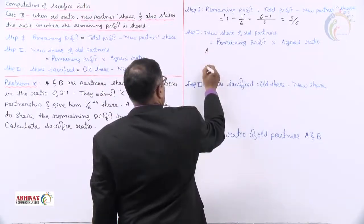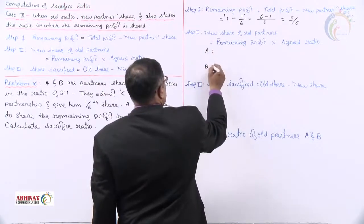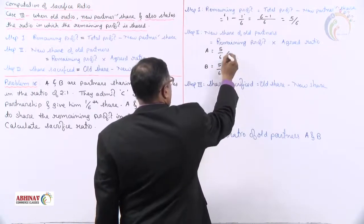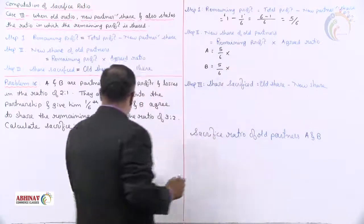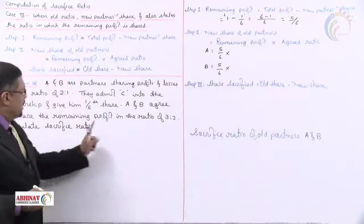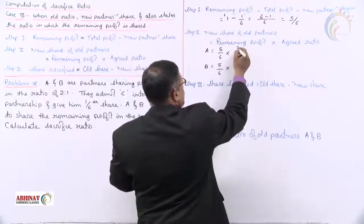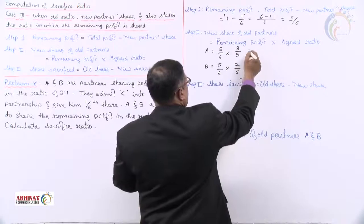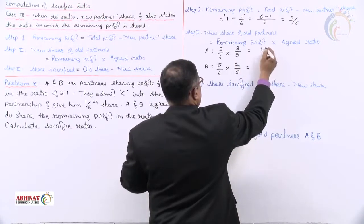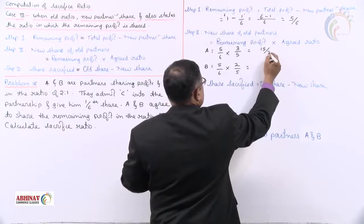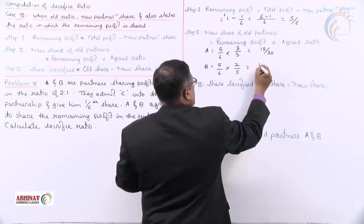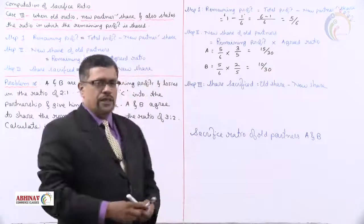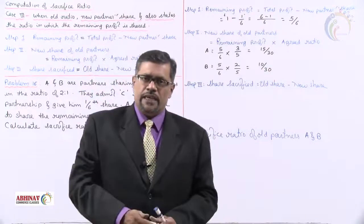Step 2 — new share of old partners. Remaining profit 5/6 is distributed among A and B in the agreed ratio 3:2. The fractions are 3/5 and 2/5. So A's new share = 5/6 × 3/5 = 15/30, and B's new share = 5/6 × 2/5 = 10/30.